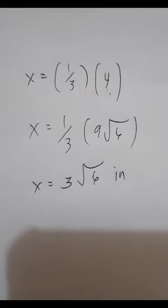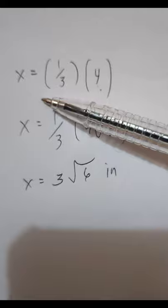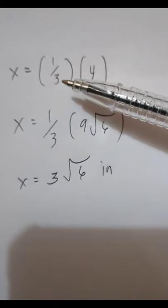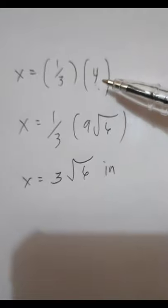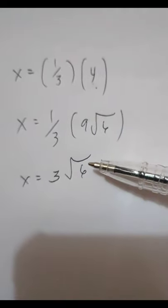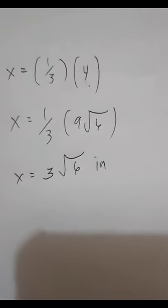Thus, the base edge of the cutoff tetrahedron is computed as X is equal to 1 third times Y. As we know, Y is equal to 9 square root of 6. We substitute here.